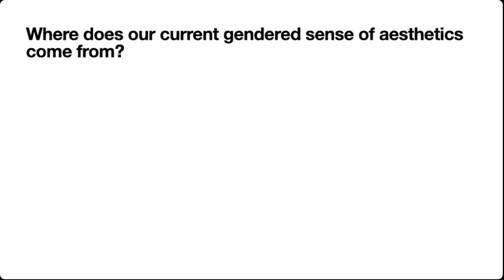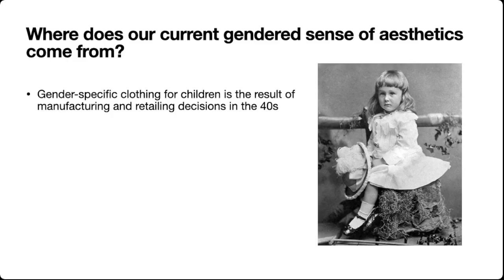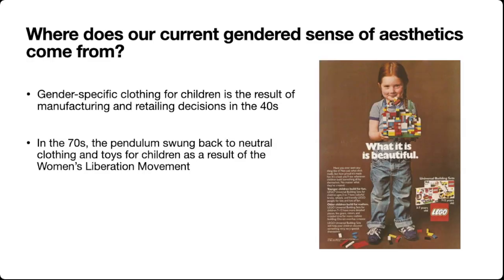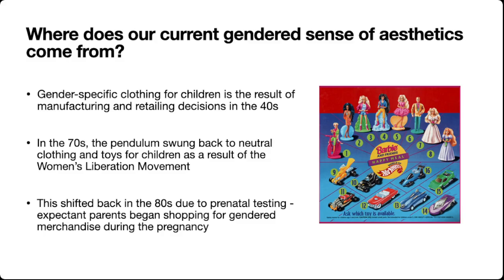I want to quickly touch on the relationship between commercial goods and gender. Prior to the 1940s, products weren't really marketed separately to different genders — gender-specific clothing for children is a result of specific manufacturing and retailing decisions in that era. In the 70s, that pendulum swung back to neutral clothing and toys for children as a result of the women's liberation movement. This is a pretty iconic ad from Lego featuring a little girl in gender-neutral clothing. Then in the 80s, this all shifted back due to prenatal testing — expectant parents began shopping for gendered merchandise during pregnancy because marketers found there was a huge marketplace for it.